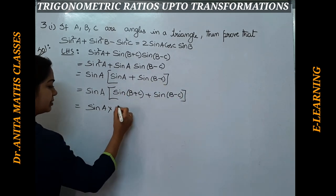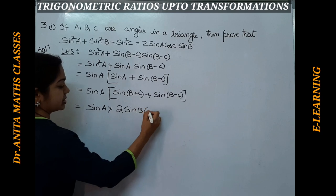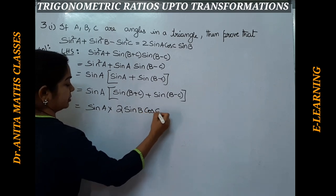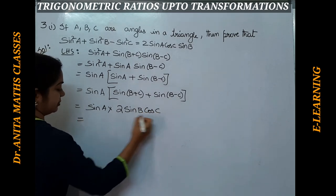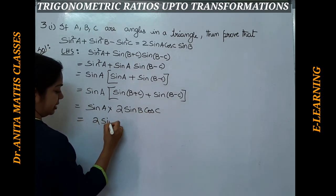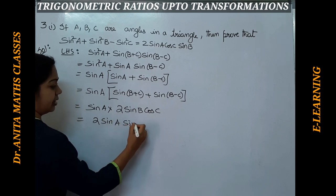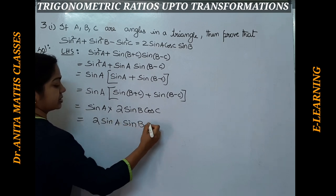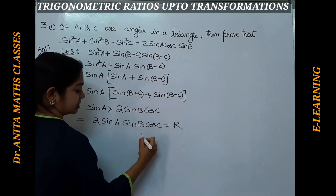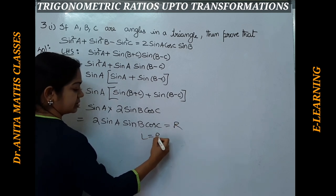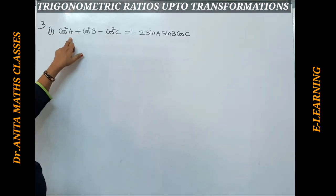Applying the transformation, sin(b+c) + sin(b-c) = 2 sinB cosC. So multiplying, we get 2 sinA sinB cosC, which is exactly the RHS. Therefore LHS = RHS. Pause the video and note it down.